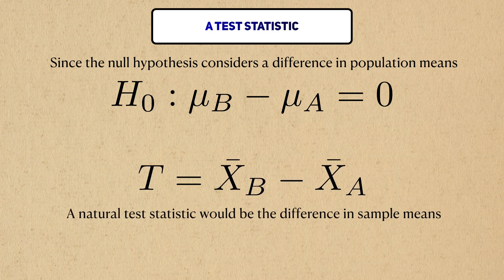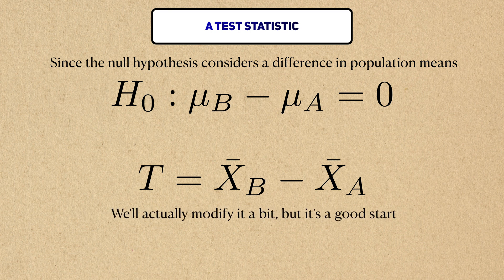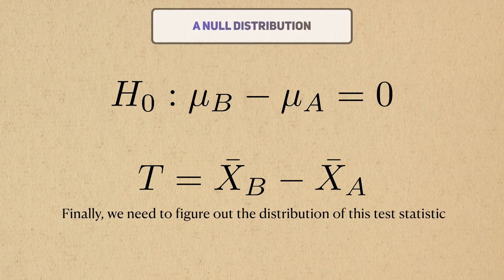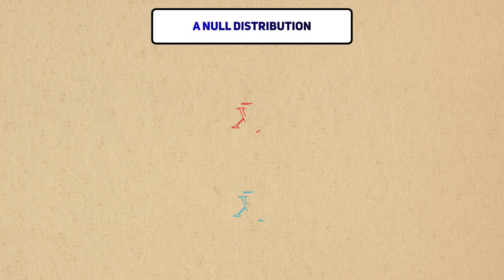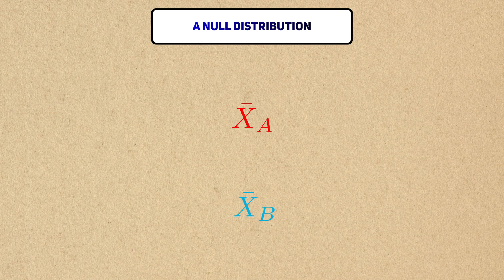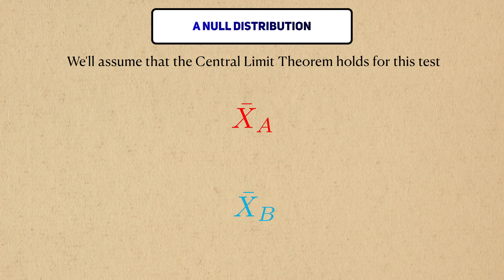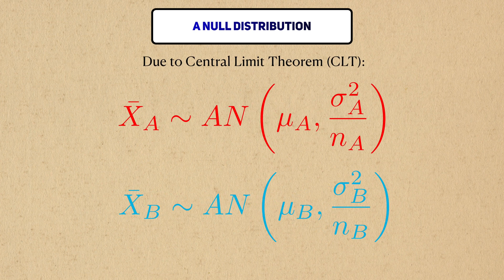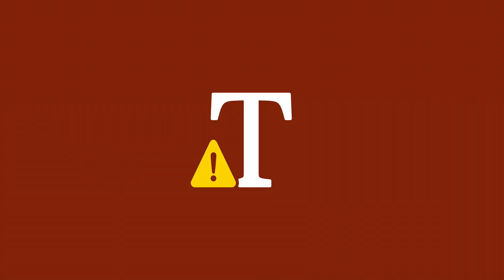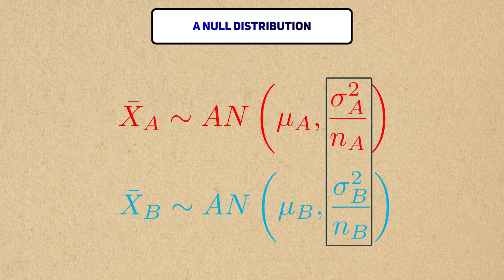Since the null hypothesis considers a difference of population means, a natural test statistic we might want to use is the difference in sample means. We'll actually modify it a bit like we did with the test statistic of the one-sample t-test. But now we need to figure out the distribution of this difference in sample means. Both of the sample means have their own distributions. If we can assume the central limit theorem holds for both of them, and we will, then both of these sample means will have an asymptotic normal distribution centered at the population mean with the variance equal to the group's population variance divided by the number of people in the sample.